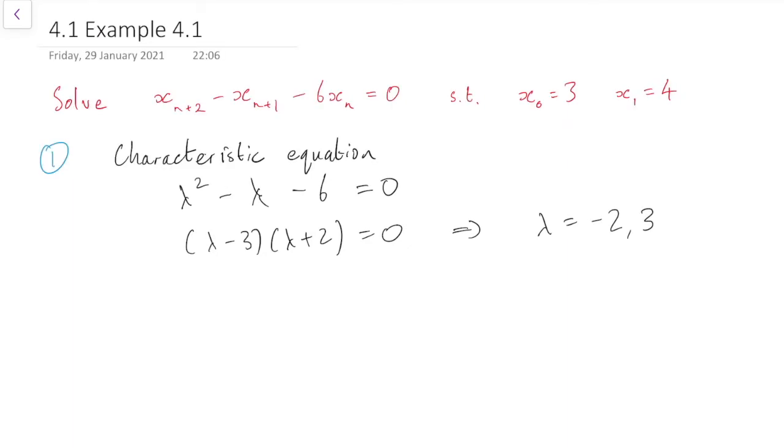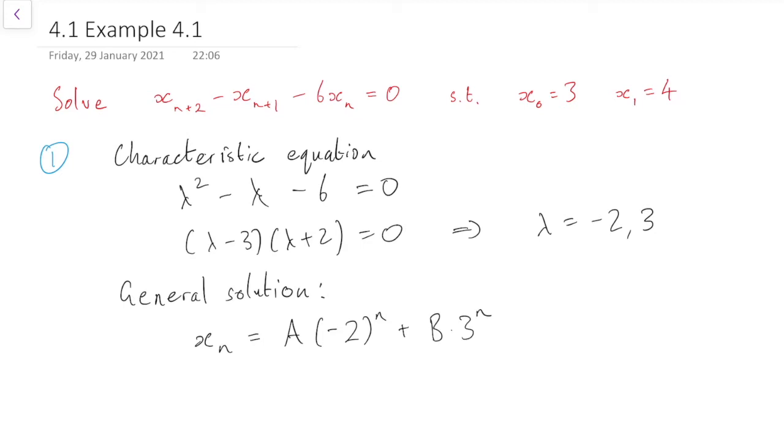And note that those are distinct solutions, which means that the general solution to the linear difference equation is x_n equals A times (-2)^n plus B times 3^n, putting in those two values of lambda that we found in the characteristic equation.